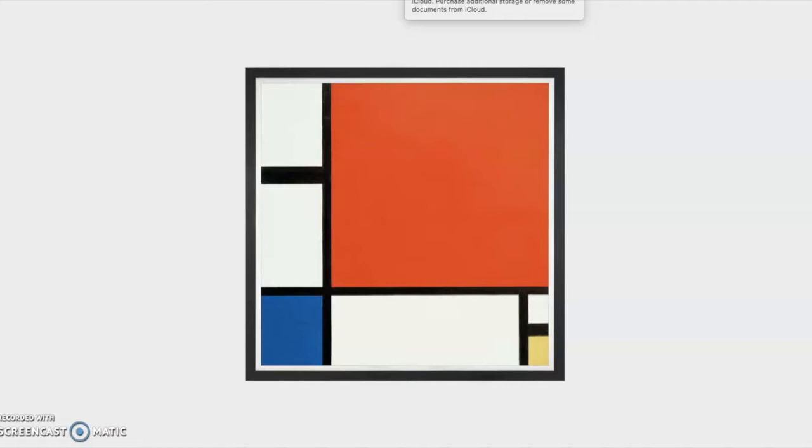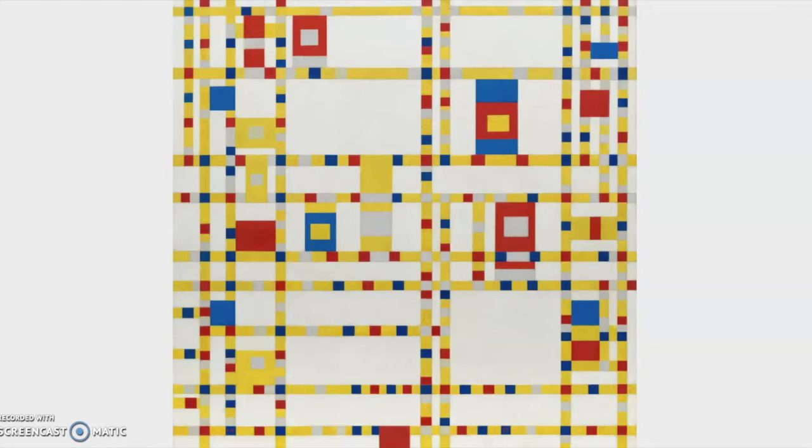Now I'm going to show you one more piece of art from Mr. Mondrian and I want you to name the colors, lines, and shapes that you see. This piece of artwork is called Broadway Boogie Woogie. Again take a few moments to name some colors, lines, and shapes that you see in Mr. Mondrian's art.